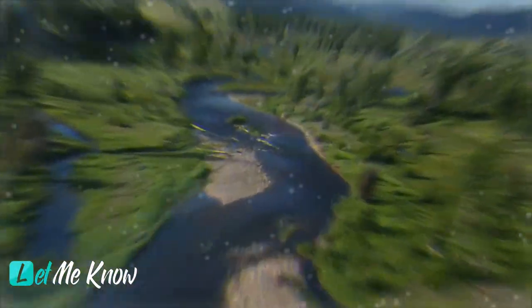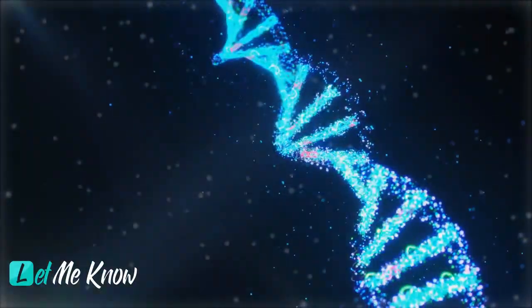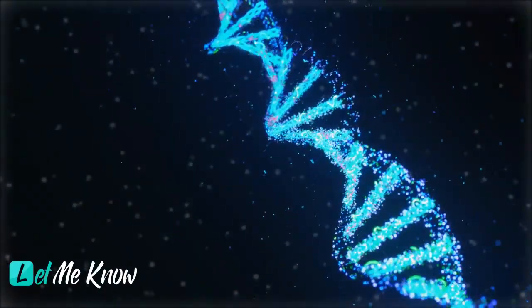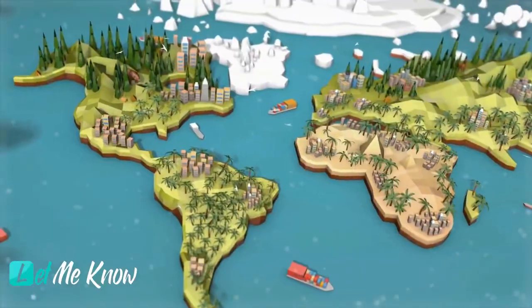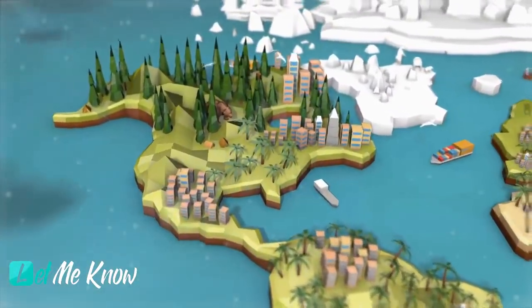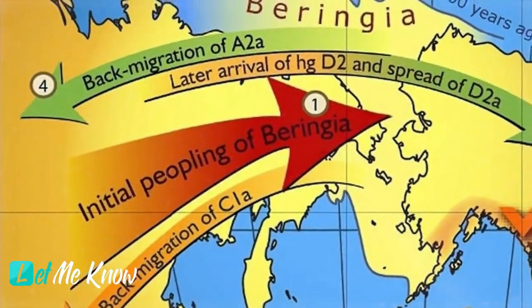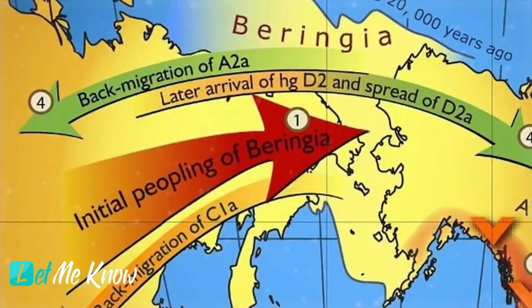To understand how humans might have migrated from Siberia to Alaska, we have to go back to the time of the last Ice Age. In fact, what's commonly called the Ice Age was actually a period of glaciation. There have been five ice ages in our planet's history and we're currently in one called the Quaternary, which started 2.6 million years ago.